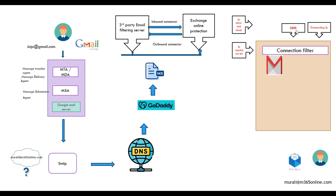Directory-Based Edge Blocking checks whether the recipient name — in this case, Murali — can be found within this tenant. If it is found, processing continues; otherwise it sends a non-delivery report back to the Google mail server. Next, the connection filter verifies the connecting IP — in our case, the IP address of the Google mail server — and checks it against the IP allow and block list, taking action on the email as per the configuration.